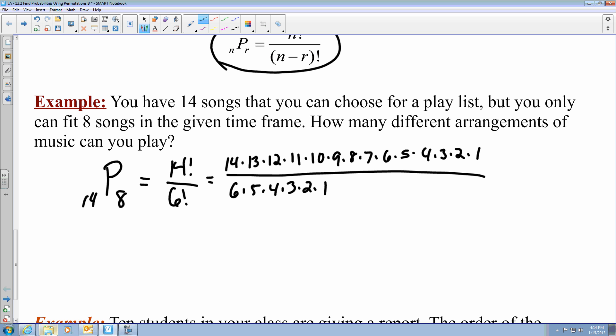Now we can do some cancellations. Since we have a 6 in the numerator and denominator, we can cancel those, including with the 5, 4, 3, 2's, and 1's. So now all we have to do is take 14 times 13 times 12 times 11 times 10 times 9 times 8 times 7. So that leaves us with 121,080,960 different arrangements that you could take for your playlist. Now I wouldn't want to find 121,080,960 different datasets, so luckily we have this equation to help us out.